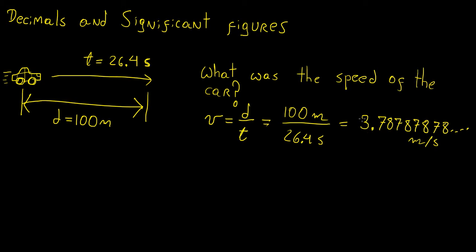What we need to do to make this more readable and a little bit more accurate is to round it up or round it down. Rounding is the process of choosing a number of decimals you want to include in your answer, and then looking at the number next to it — based on that number you're going to change the value of the previous number.